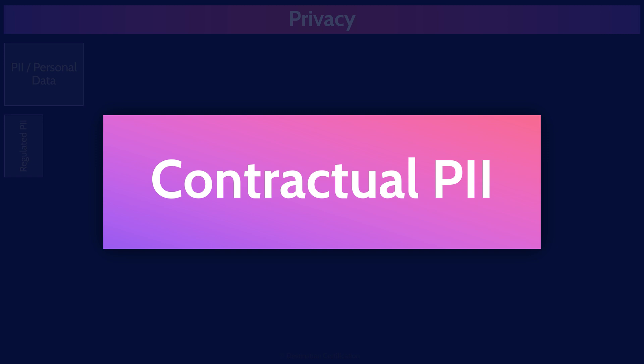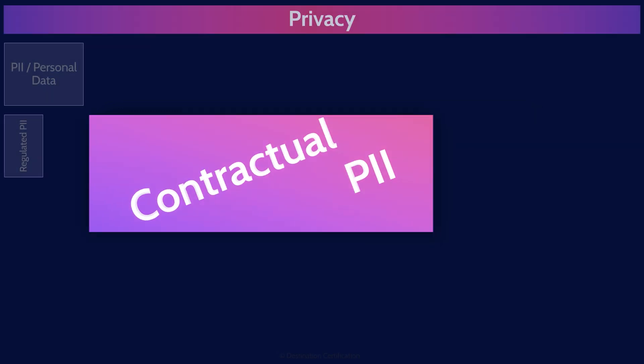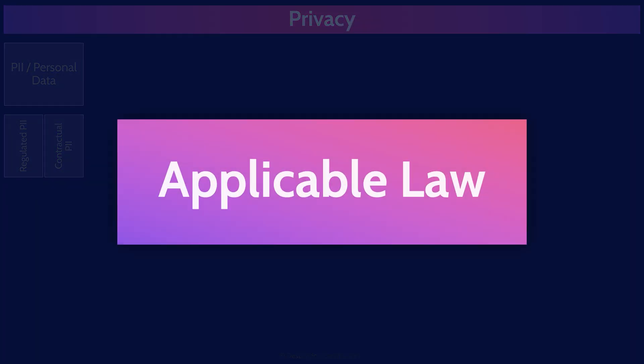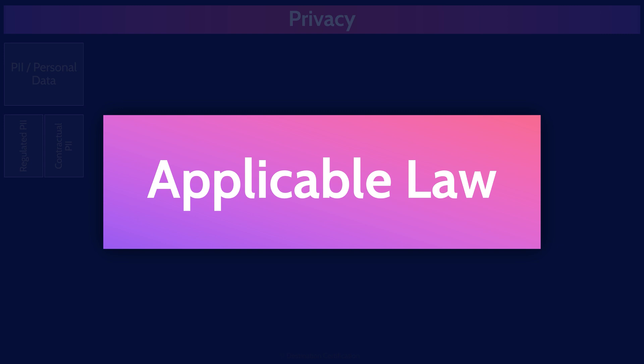Here are a couple of important and subtle definitions to remember. Applicable law refers to the specific set of laws or legal standards that govern a particular case or contract. This determines which rules, statutes, or regulations are used to interpret legal obligations and rights. For instance, a contract might specify that California law applies, meaning California's legal codes will be used to resolve any disputes related to that contract.